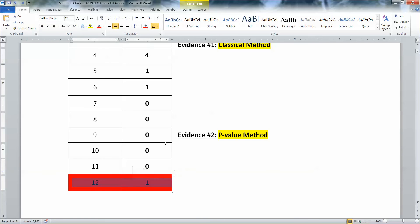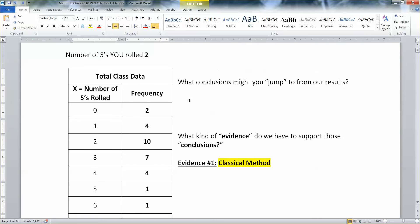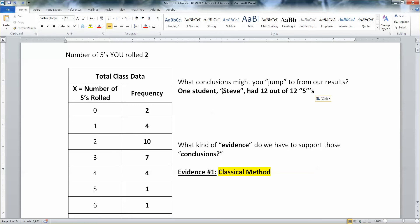So this student, quote unquote, actually it wasn't a student. I believe it was my husband, who's the other stats professor. He got 12 out of 12 fives and his name is Steve. So Steve had 12 out of 12 fives. Now, what are some conclusions that we jump to when we see that? And as a matter of fact, the students in the room did this. They were like, he's lying. Something's going on.